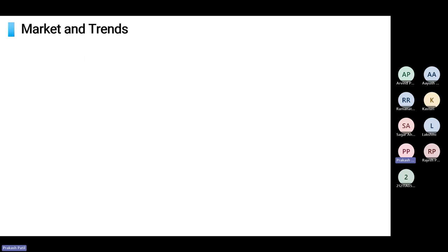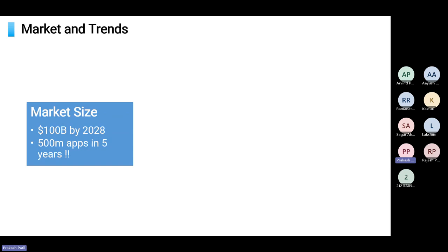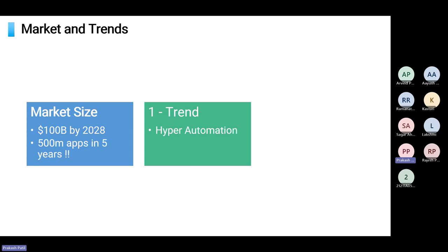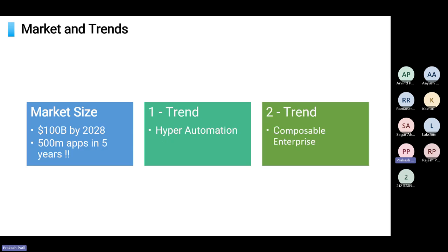The market size is around $30 billion currently and will reach $100 billion by 2028. As per predictions, we will have 500 million apps in five years — more than all the apps built in the past 30 to 40 years. Two new trends from Gartner are hyper-automation and composable enterprise, which will lead the growth in low-code and no-code technologies. And AI was not yet accounted for in these numbers, so the projected market share will likely grow even more.